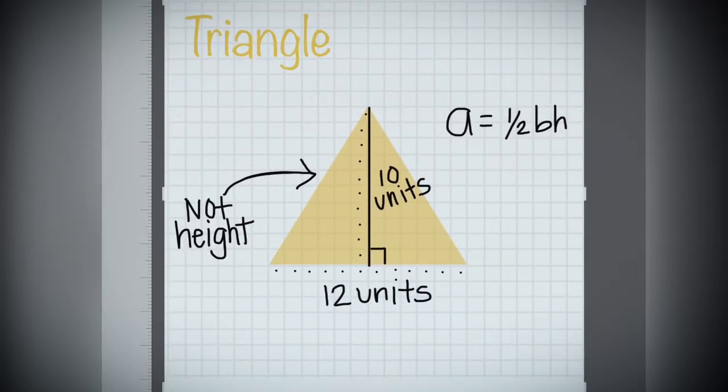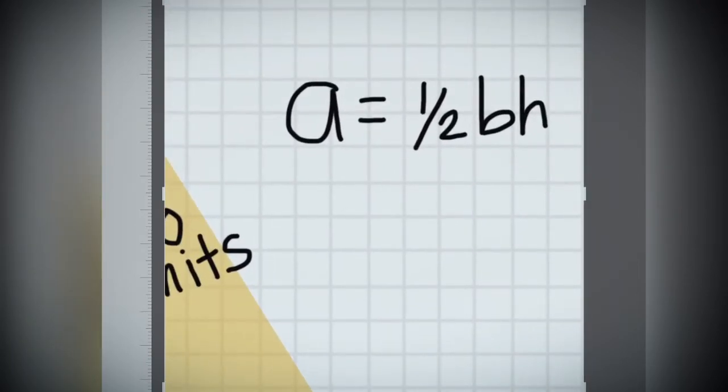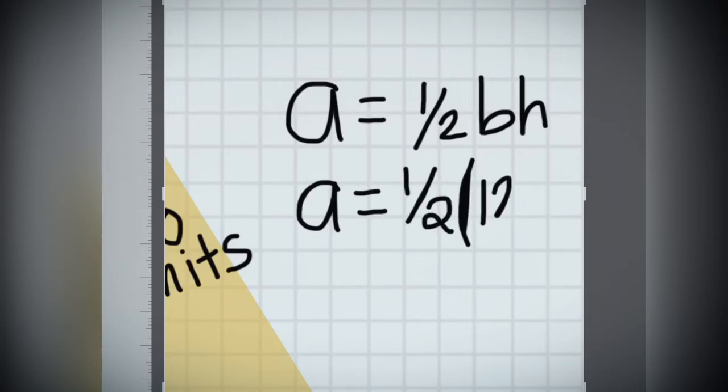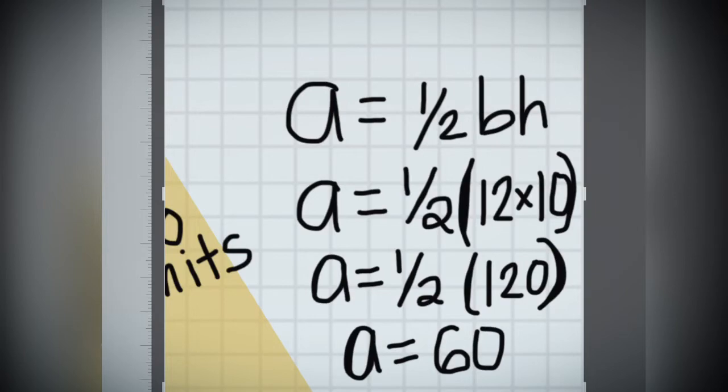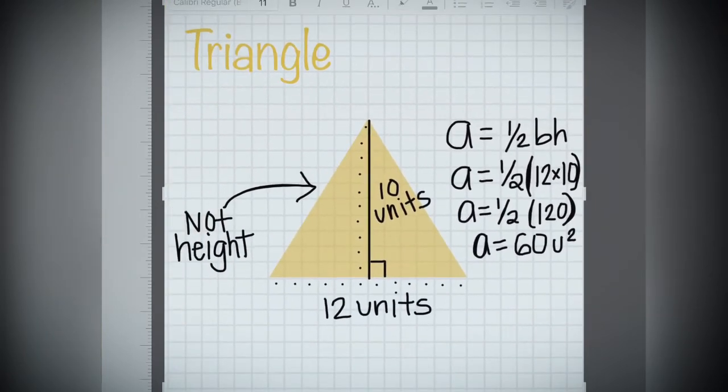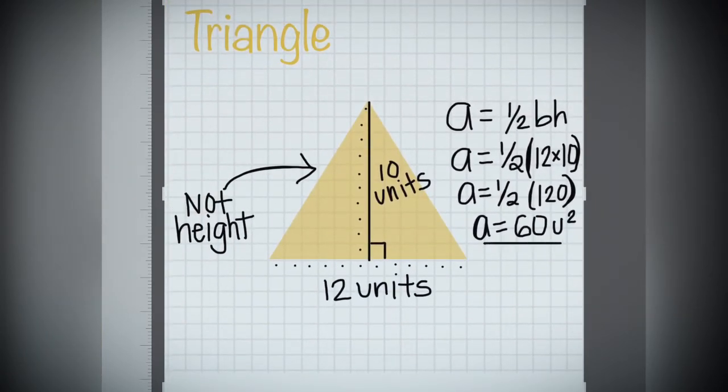Let's go ahead and plug in what we know. Area equals 1 half of the base times the height. The base is 12. The height is 10. Area equals, again, let's do what's in parentheses first, 120. And area equals half of 120, which is 60. So for this triangle, we have 60 units squared.